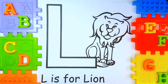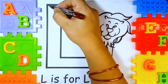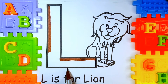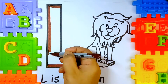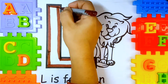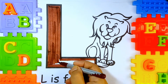Hello kids, today we are going to color the capital letter L. So let's get started. L, L is for lion. L, L is for lamb. L, L is for lotus. L, L is for ladybug.